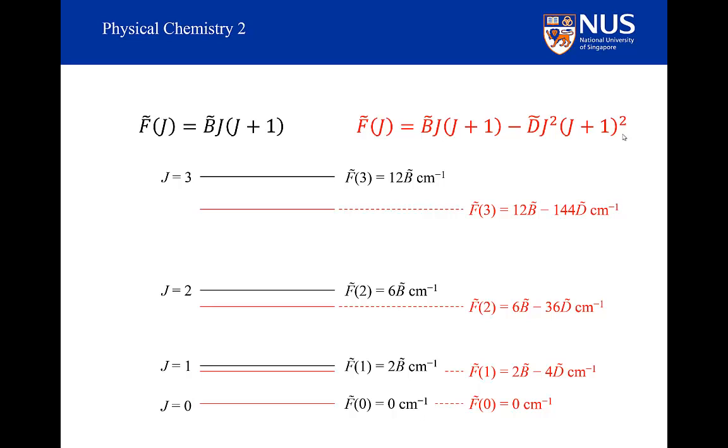Clearly, if D is very small, this won't be noticeable. But if D is large, or if the system is in a high J state, you will see this difference. That's what we were seeing in the carbon monoxide spectrum as the gap between spectral lines gets smaller and smaller.